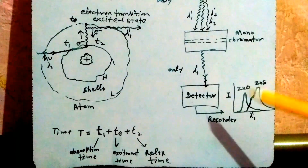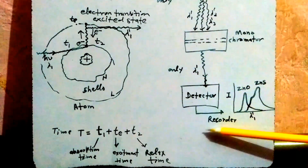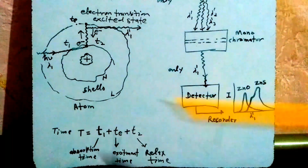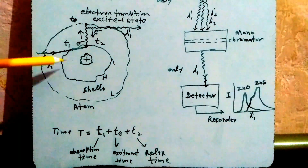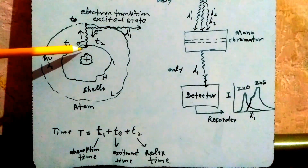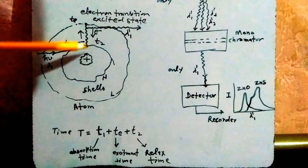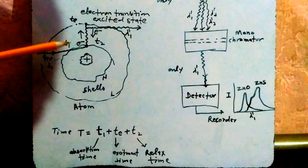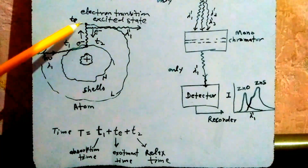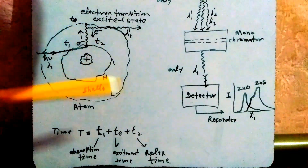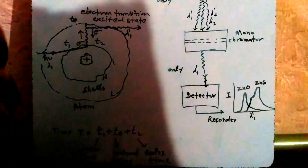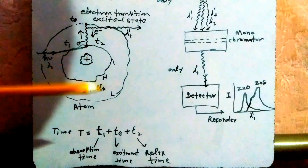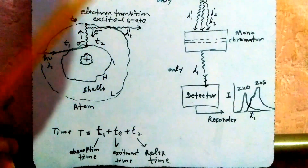At the atomic level, when we throw light on the sample, it interacts with the atoms — the electrons are excited and move toward higher energy shells. The time taken is denoted as t. In the excited state, the electron stays for a time te, which may last microseconds, femtoseconds, or even minutes or hours, after which the spectrum is re-emitted from the sample.